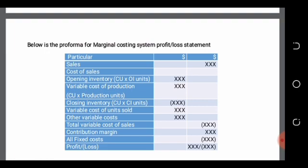Subtracting the total variable cost of sales from sales gives our contribution margin, or simply contribution. Up to the contribution margin, we have subtracted all variable costs, so we are left with only fixed costs. Subtracting all fixed costs gives our profit or loss. That is how the marginal costing system profit statement is obtained.